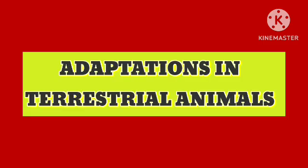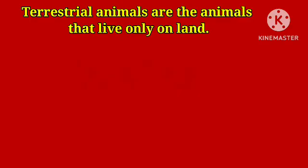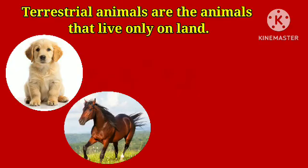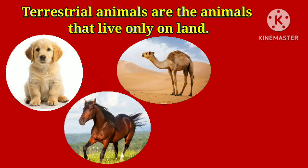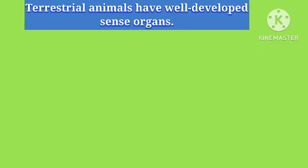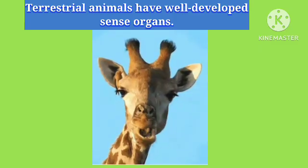Adaptations in Terrestrial Animals: Terrestrial animals are the animals that live on land. Dogs, horses, camels and lions are some terrestrial animals. They have the following features that help them to live on land.